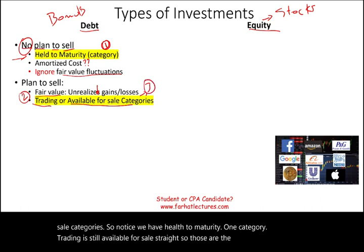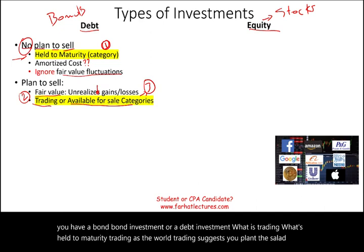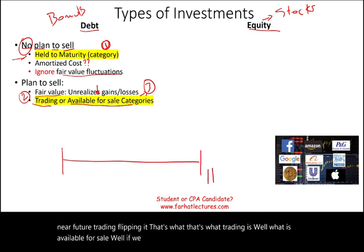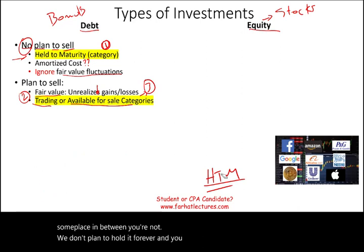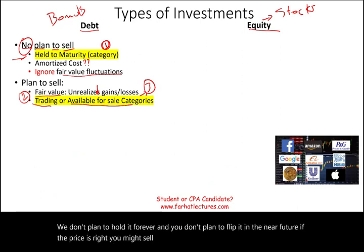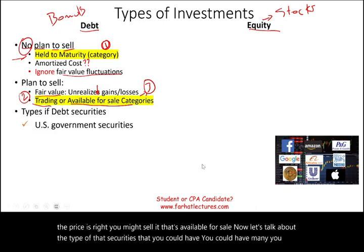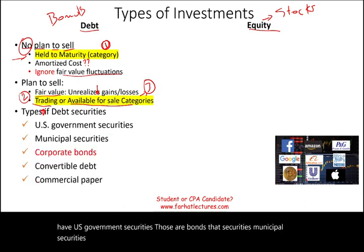So we have three categories: held to maturity, trading, and available for sale. Trading — as the word suggests — means you plan to sell it in the near future, flipping it. Available for sale sits in between: if HTM is one end and trading is the other, available for sale means you don't plan to hold it forever and you don't plan to flip it in the near future — but if the price is right, you might sell it. As for types of debt securities, you could have U.S. government securities, municipal securities, corporate bonds, convertible debt, and commercial paper. For our purposes as accounting students, we will deal with corporate bonds.